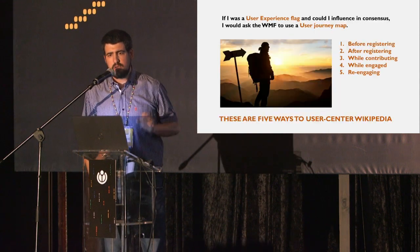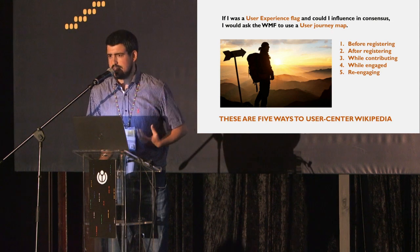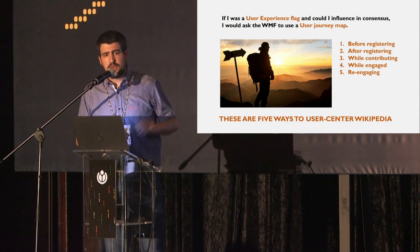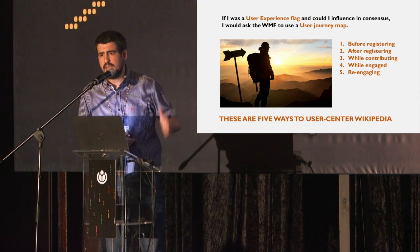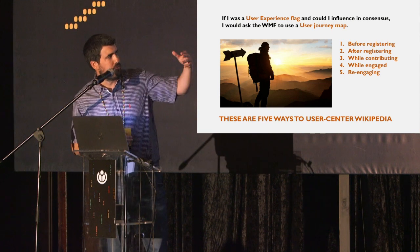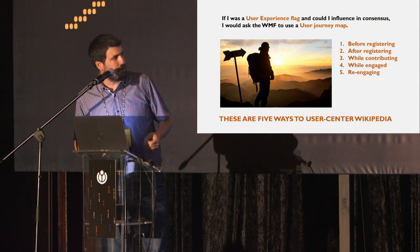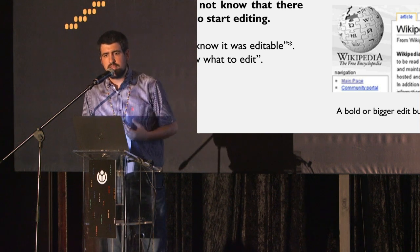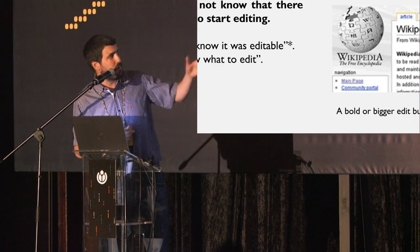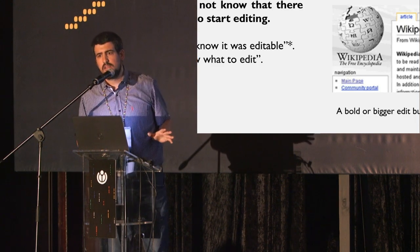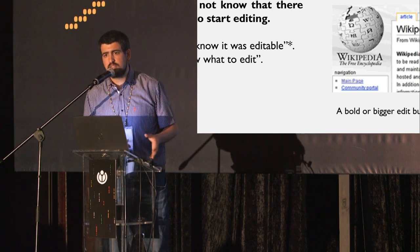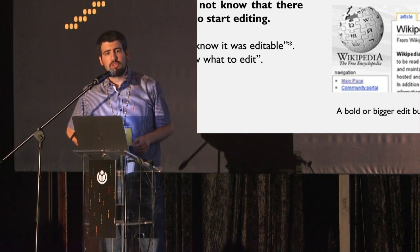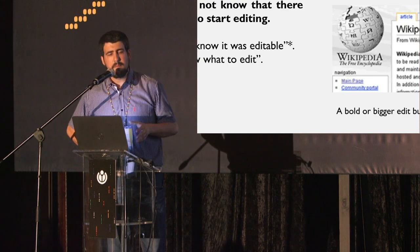There are ways, from a user experience perspective, that are useful, and I'm happy some are already being taken into account. There is a UX tool called User Journey, which implies dividing every part of the experience into different steps — starting in Wikipedia: before registering, after registering, while contributing, while engaged, and re-engaging. First of all, it's really important for new editors to realize that it is possible to edit. Just putting 'edit' in bold is not enough — there is still a large percentage of users who do not know it's possible to edit, and there is new research supporting this. We should look for ways to make this more visible.